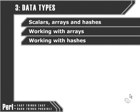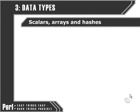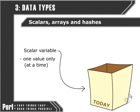Let's take a look at what these different data types are. So far, we've only seen simple variables, or scalars. A scalar variable can only contain one value. The today variable can only be one day at a time.